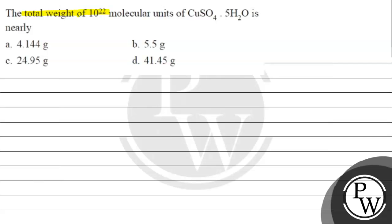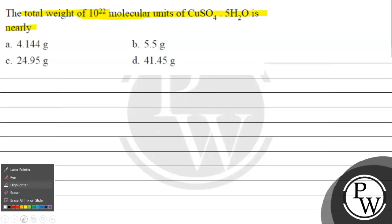The question says the total weight of 10^22 molecular units of CuSO4·5H2O is nearly: option A, 4.144 grams; option B, 5.5 grams; option C, 24.95 grams; option D, 41.45 grams.